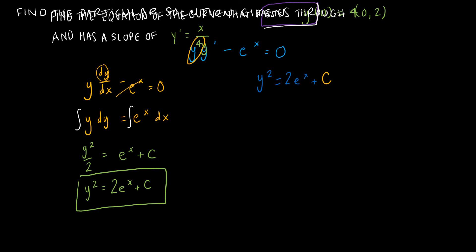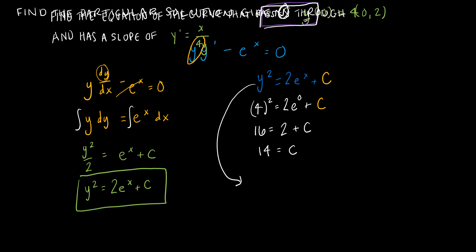I'm going to take the initial condition and plug it in. This is telling me that if I plug in 0 for x, y is 4. So 4 squared equals 2 times e to the 0 plus C. Now it's just algebra: 4 squared is 16, and e to the 0 is 1 — anything to the 0 power is 1 — so this is 2 plus C. I would subtract 2 from each side to get 14 equals C. My final solution is to replace C with 14, so y squared equals 2e to the x plus 14.